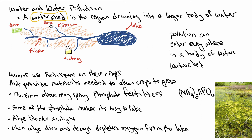Here I've drawn out these little blue streams going into a river that finally flows into a lake, which defines all the watershed for this lake. On some of the streams I have a farm, a factory, and a house. Pollution can enter anywhere in the watershed — from the house, the farm, or the factory — and eventually get down to the lake.